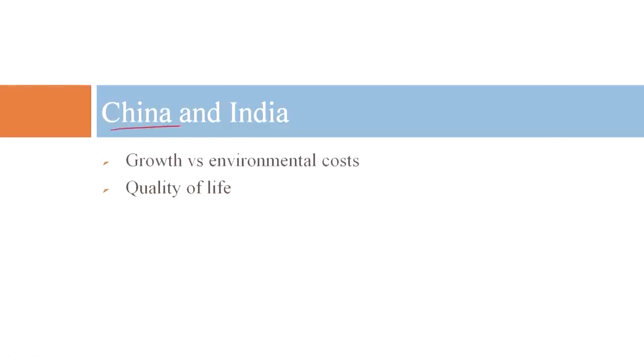Let us look at the growth stories of China and India with respect to GDP and purchasing power, and then the environmental costs. Quality of life is ultimately what we all want. When I ask a new class of students what they want in life, most people want good food, a good spouse, a good house, and material luxuries — along with the essentials: food, health, and water.